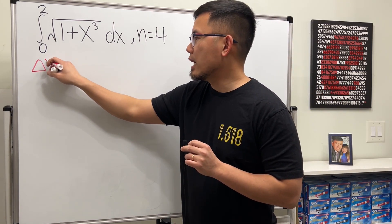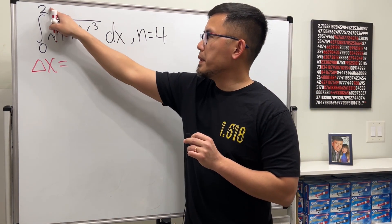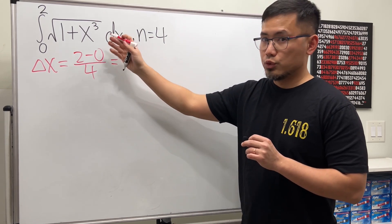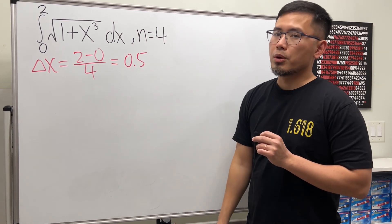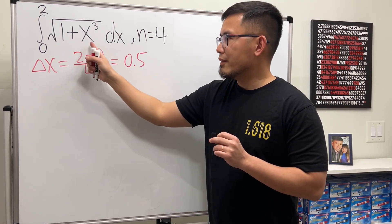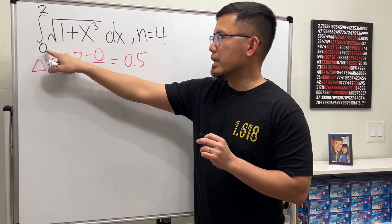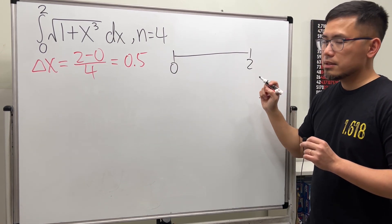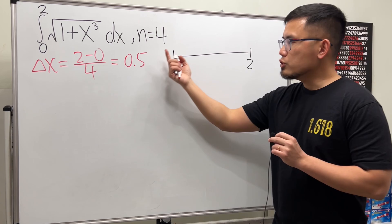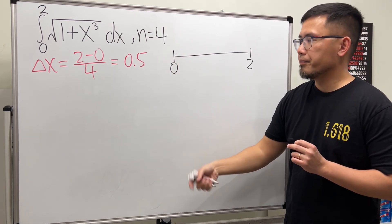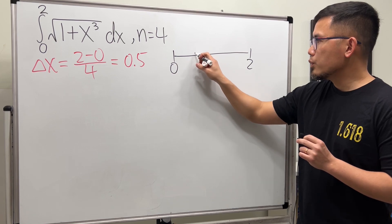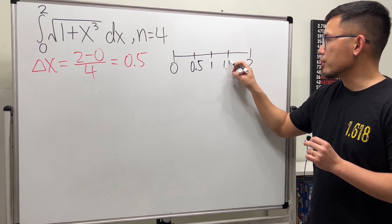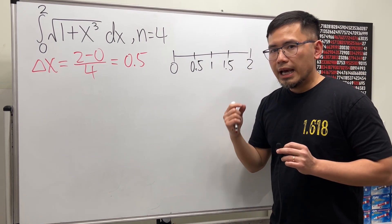First we are going to compute delta x, and that's just b minus a — so that's 2 minus 0 over the n value — which is just one half, or 0.5. Next, you really don't have to graph this function, but pay attention to the interval and draw a number line. We have 0 to 2, and delta x tells us each step is 0.5, so: 0, 0.5, 1, ...